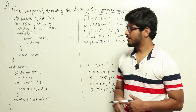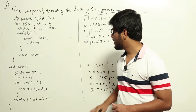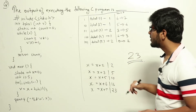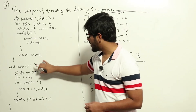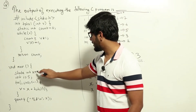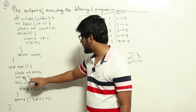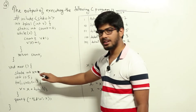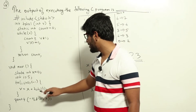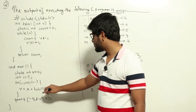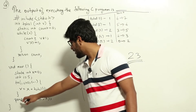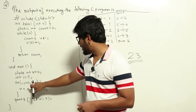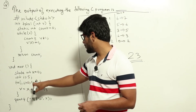This is a C programming question. They have given us a particular code and are asking what the output would be on executing it. In the main function, a static int x is set to 0 and i is made 5. While i is greater than 0, each iteration decrements i by 1 and does x equal to x plus total(i). At the end, the value of x is printed.